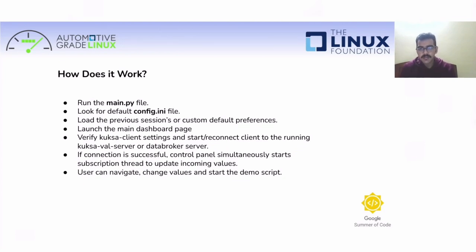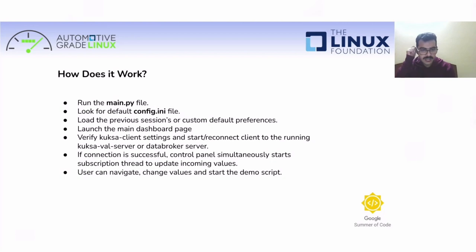After running the main program, the application looks for the default configuration with a fallback config. User preferences are loaded into the settings page where all values are defined. Once the user starts the service, using a singleton class we create an object to keep the instance the same across various widgets for the demo platform. Simultaneously we run the subscription service on a separate thread so that any values updated on the demo platform are reflected on the control panel as well. Once the connection is successful, the user is notified visually and can navigate across widgets to change values, start scripts, and manipulate all concerned parameters.